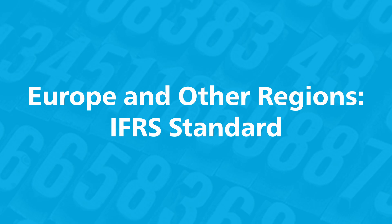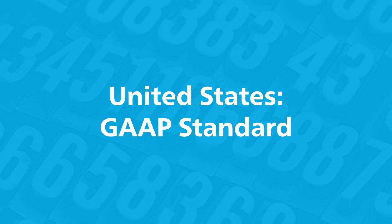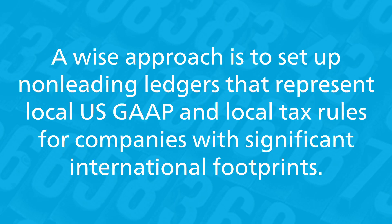For most companies in Europe and other regions, that main accounting framework would be IFRS, but in the United States, the main accounting rules are based on U.S. generally accepted accounting principles. So most big U.S. companies opt for U.S. GAAP for the leading ledger, and then many of them have IFRS in a non-leading ledger. In addition, a wise approach is to set up non-leading ledgers that represent local GAAP and local tax rules for companies with significant international footprints.